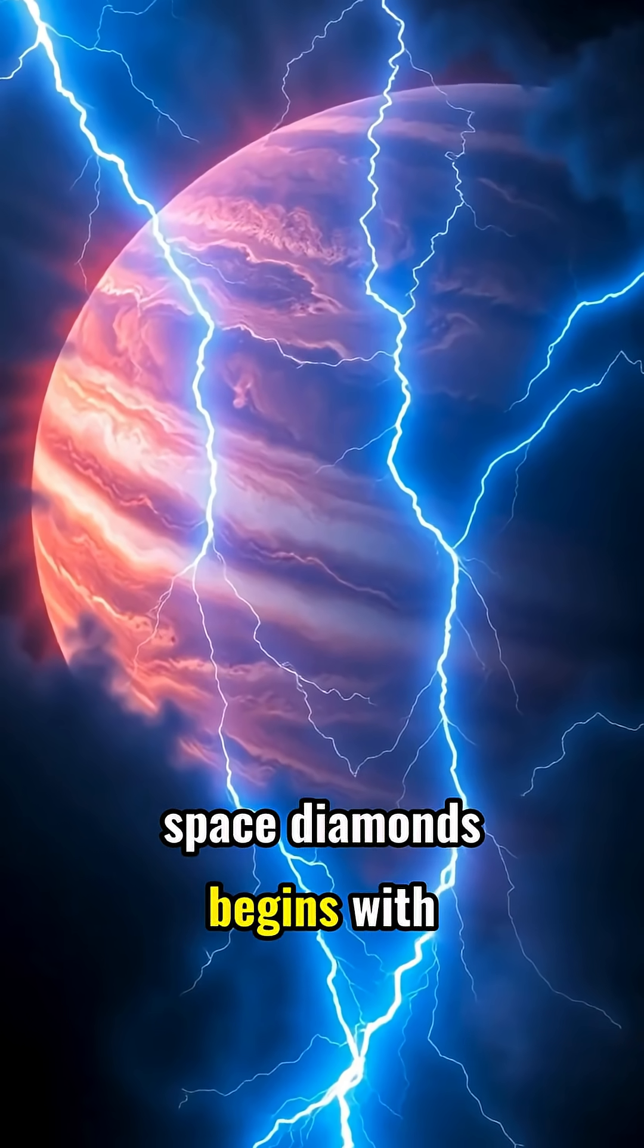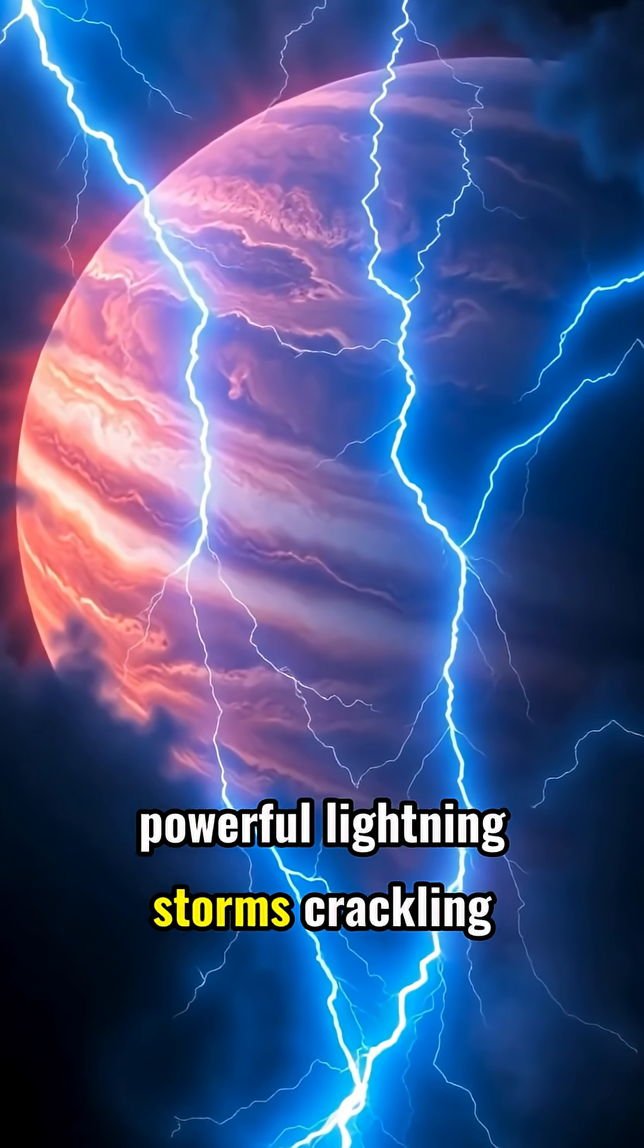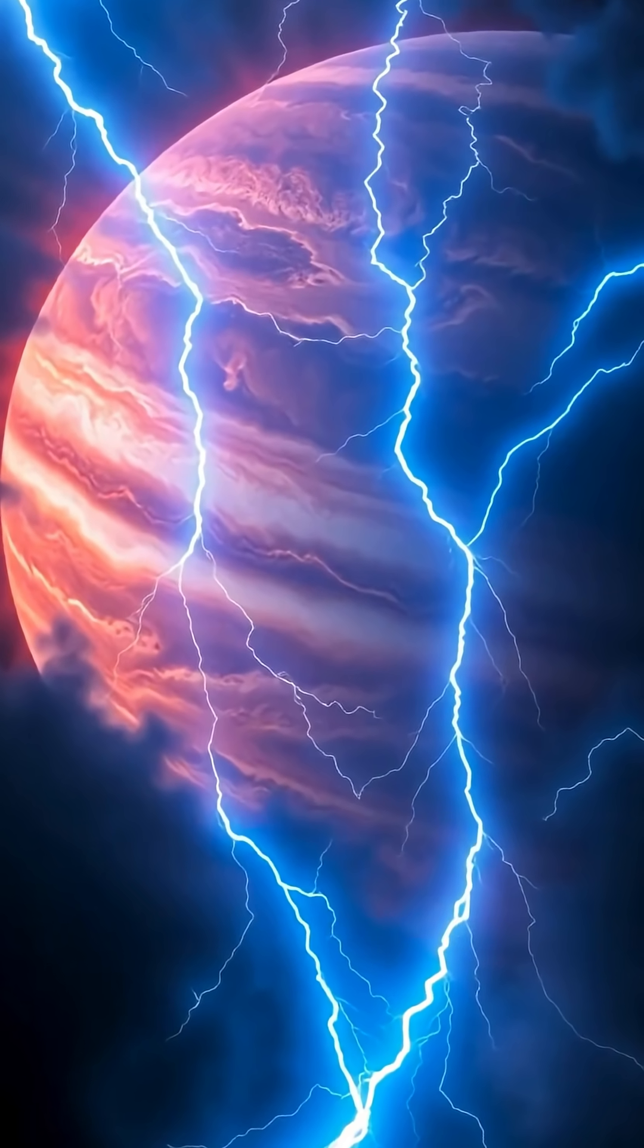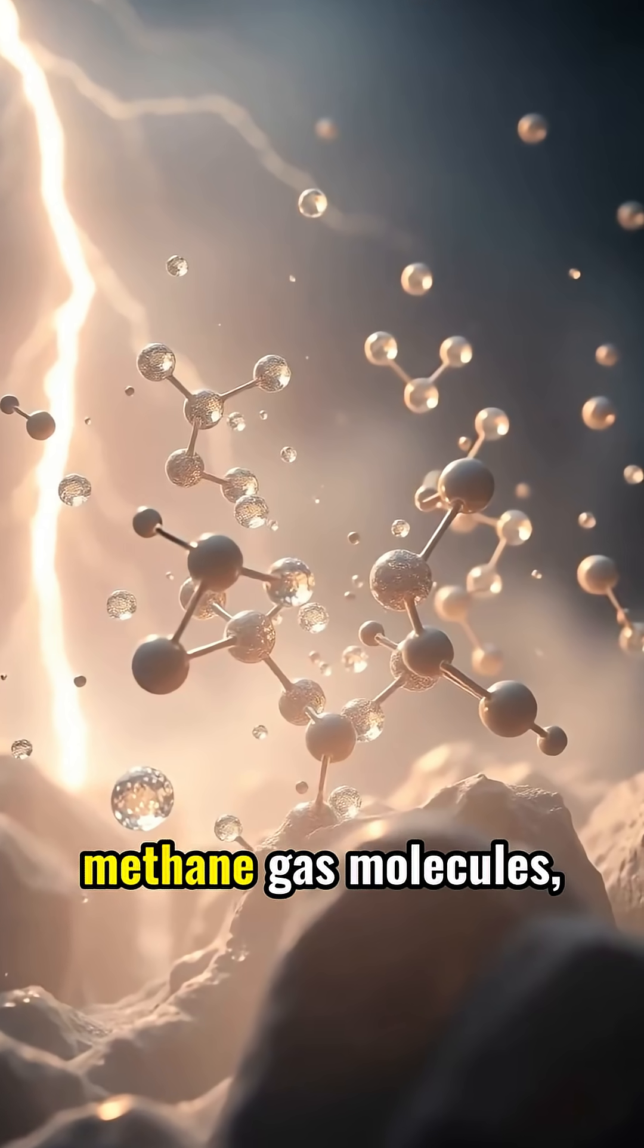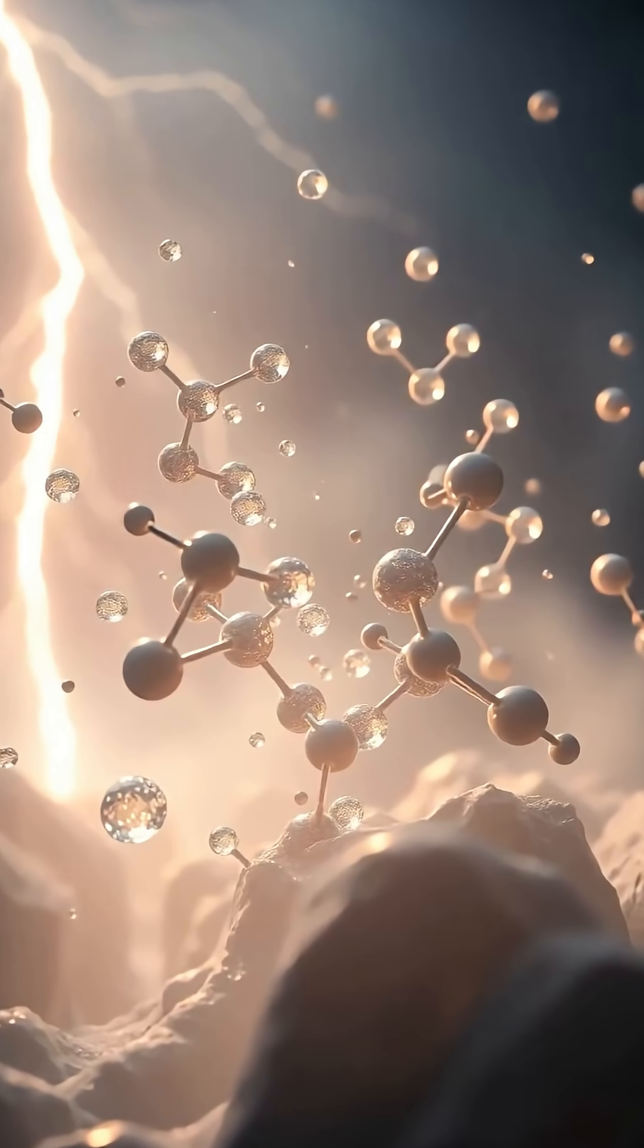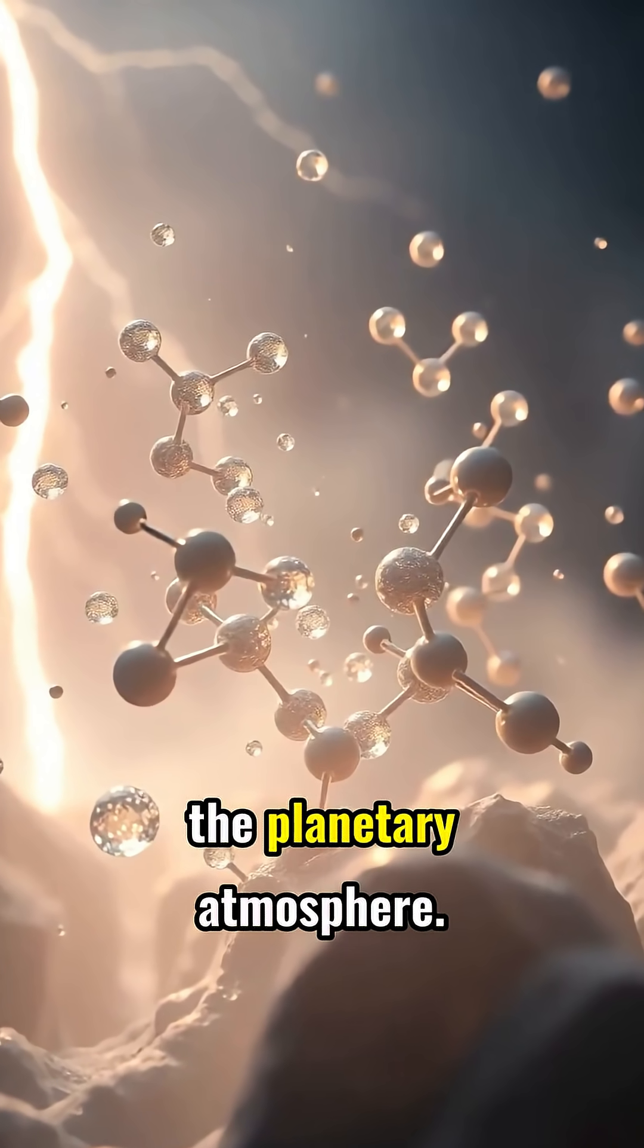The journey of these space diamonds begins with powerful lightning storms crackling through the planet's atmospheres. This lightning breaks apart methane gas molecules, releasing carbon atoms into the planetary atmosphere.